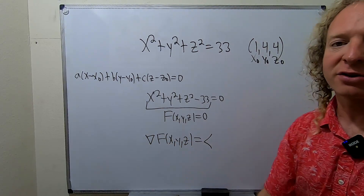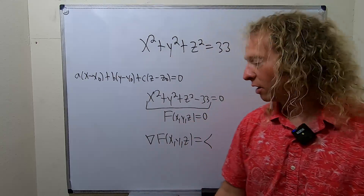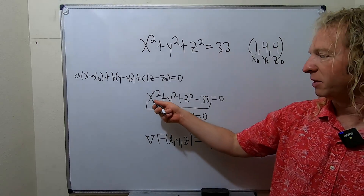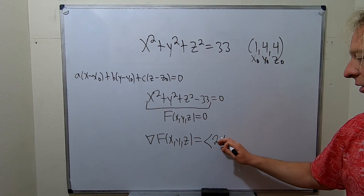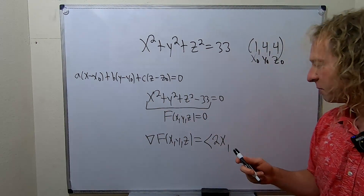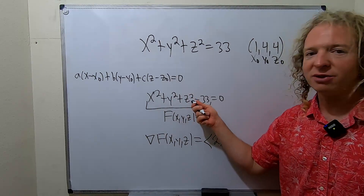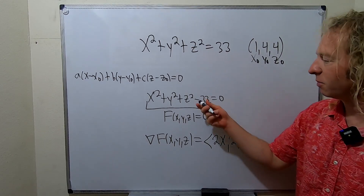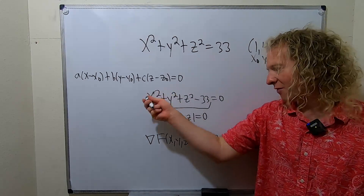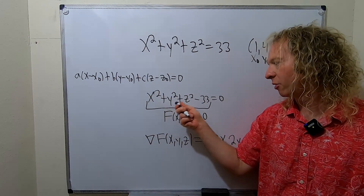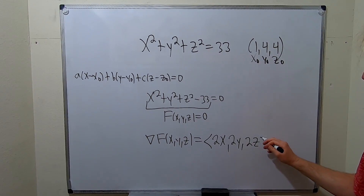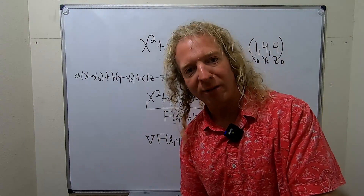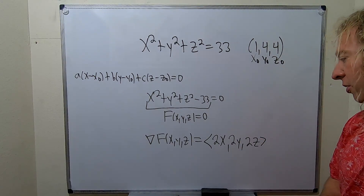The gradient is the vector of partial derivatives. The partial derivative with respect to x — everything else is constant — is simply 2x. The partial with respect to y is 2y. And the partial with respect to z is 2z. When taking the partial derivative with respect to any variable, you treat all other variables as constants, so their derivatives go away.